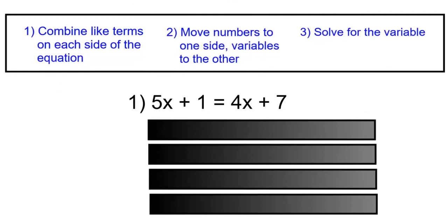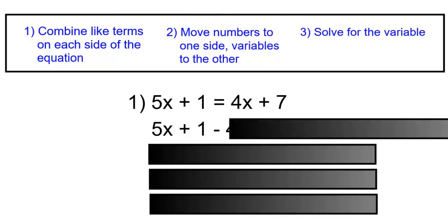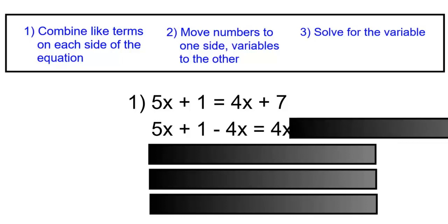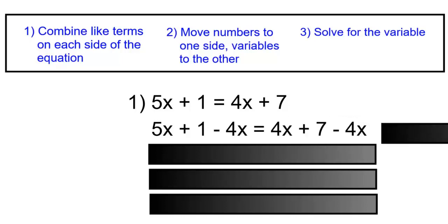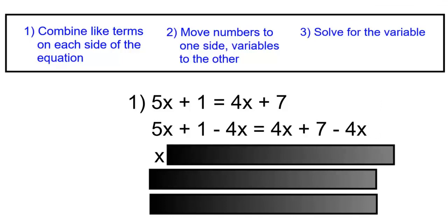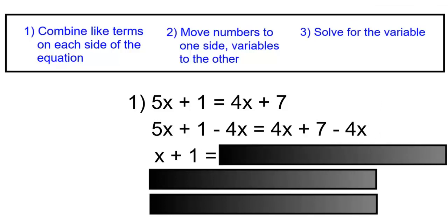For the first equation, there are no like terms on each side of the equation, so we'll begin with step number two. Remove 4x from both sides by subtracting 4x. So 5x plus 1 minus 4x equals 4x plus 7 minus 4x. 5x minus 4x is just x. The plus 1 stays. The 4x and the minus 4x will cancel, leaving us with 7.